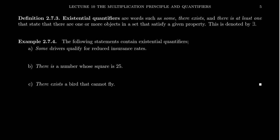In contrast to the universal quantifier, there is the existential quantifier, which captures the idea of 'some,' 'there exists,' or 'there is at least one' — that is, something exists, hence the term. If everything has a property, then something has the property, so a universal quantifier implies the existential. You can always weaken universal to existential, and the existential quantifier is typically written as a backwards E.